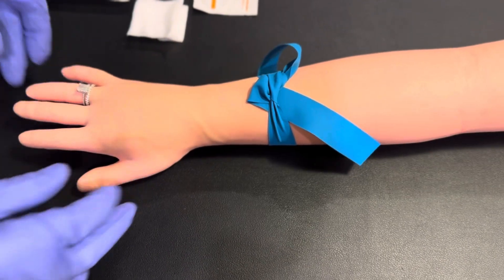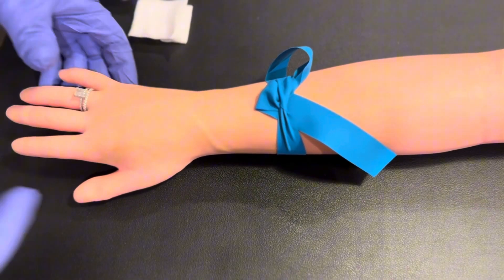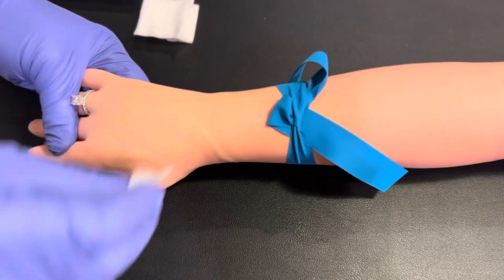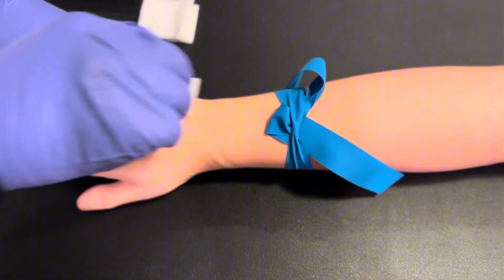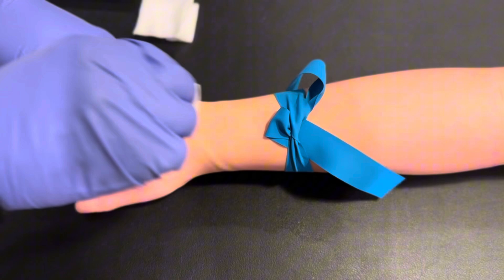Once you have selected the site, please utilize 70% alcohol to clean the venipuncture site. Clean the site in concentric circles for 20 seconds and allow the site to dry.